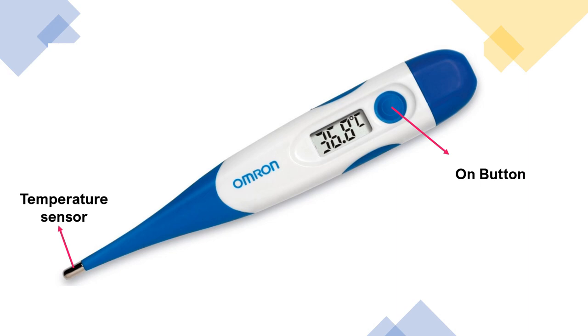Then, you can read the temperature. In this thermometer, the temperature is 36.8 degrees Celsius. Then, after reading your temperature, you can press this button again to turn off.